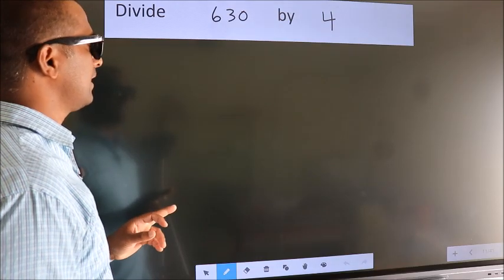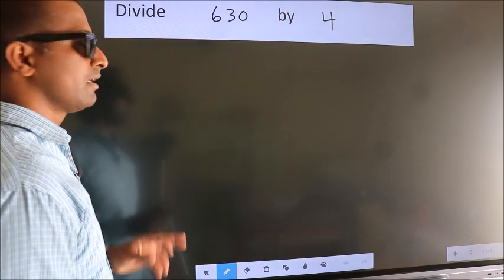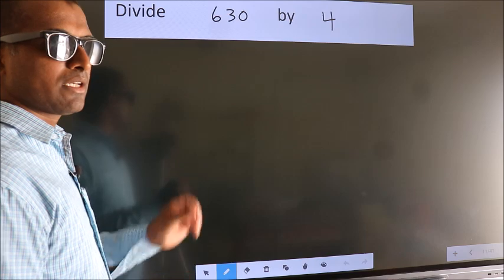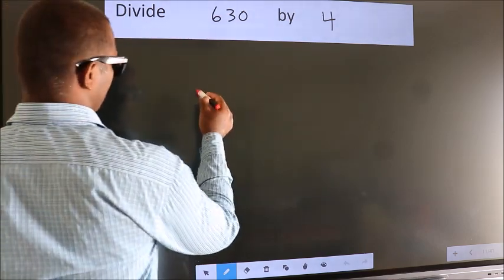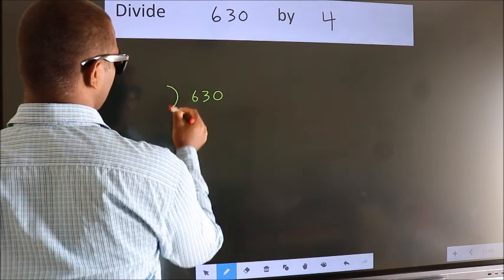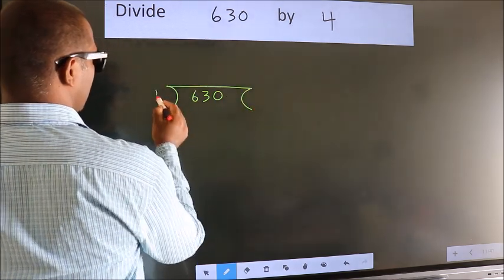Divide 630 by 4. To do this division, we should frame it in this way. 630 here, 4 here.